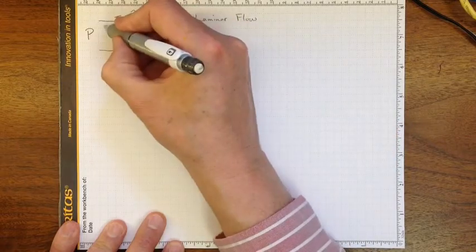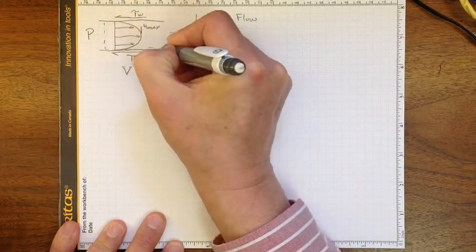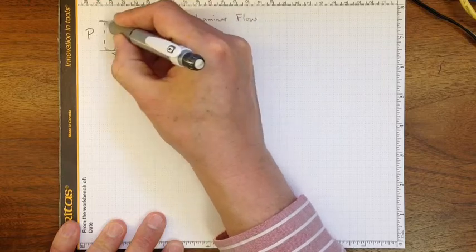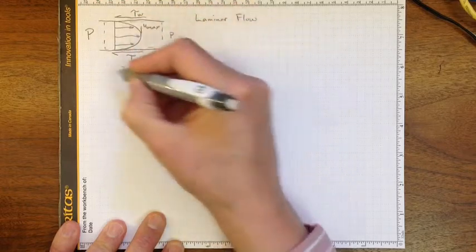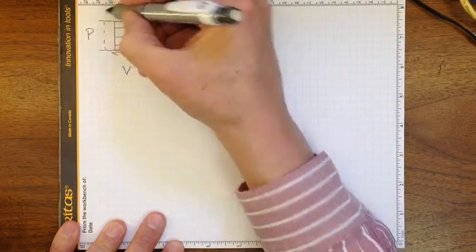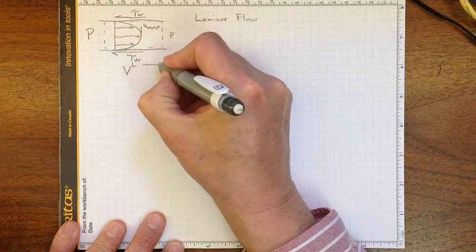So if we want to find out the interrelationship between all of those things, probably best to start by looking at a control volume. So let's assume that this chunk of our pipe is L in length.